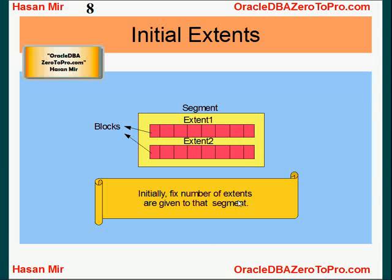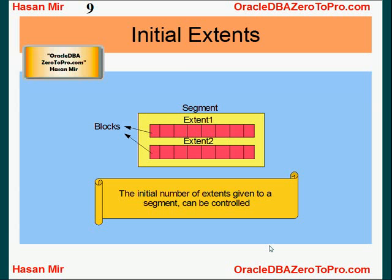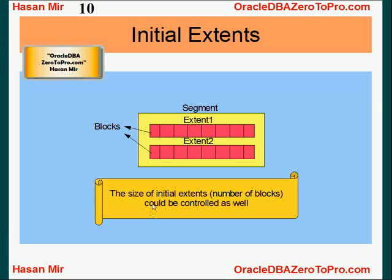Initially, a fixed number of extents are given to the segment. Let's say you create a table — a segment would be created with X number of extents. The initial number of extents given to a segment can be controlled. Of course, if you don't specify your preference, default values will come into picture. You can also specify your preferences, like in storage clauses, which we're going to see in coming tutorials. So, the DBA — or even you when creating a table — can decide how many extents this segment would have initially. Not only can you control the number of initial extents, you can also control the size of the initial extent.